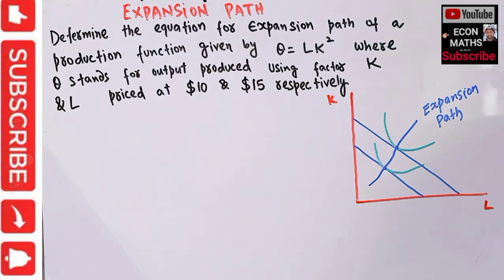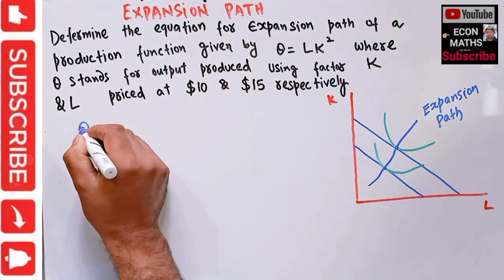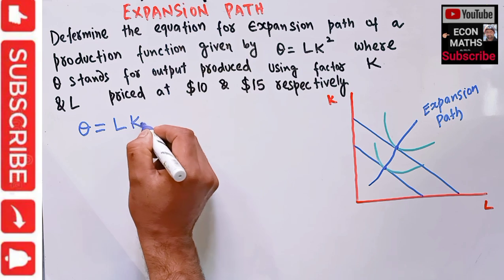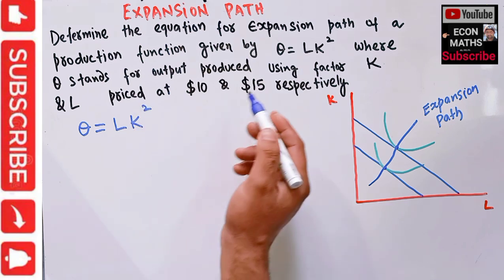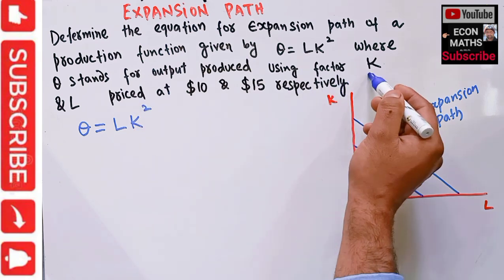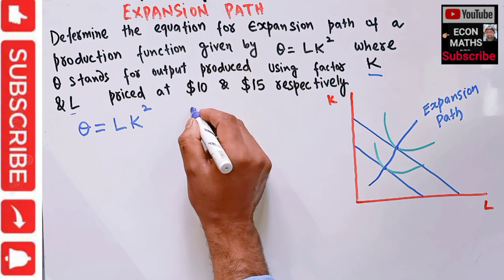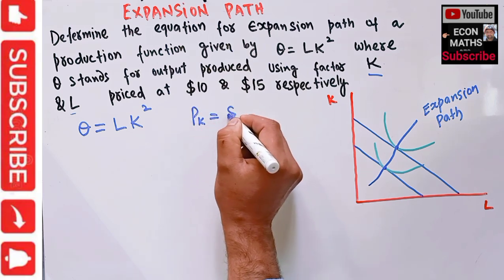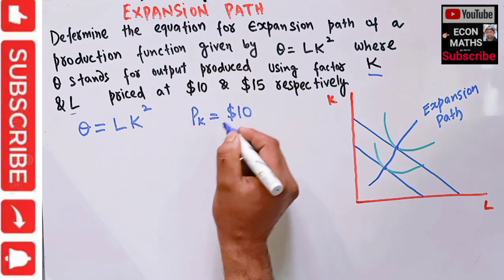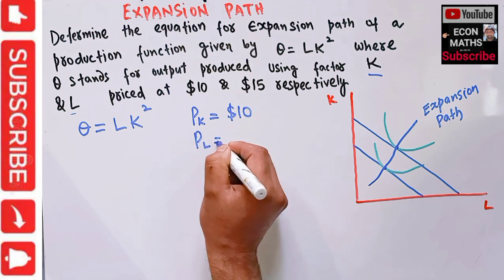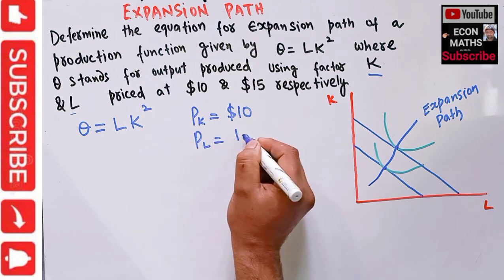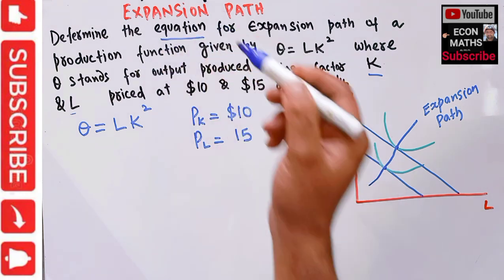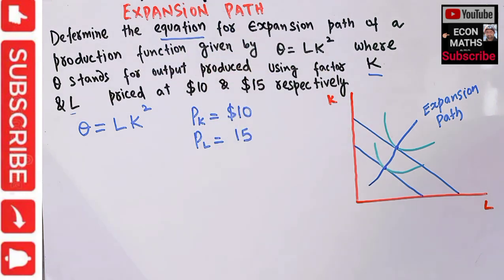We are given the production function Q = L·K². The price of capital is 10 dollars and the price of labor is 15 dollars. We need to find out the equation for the expansion path.